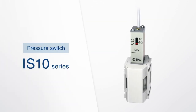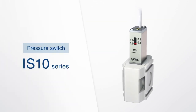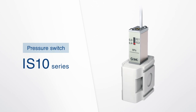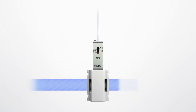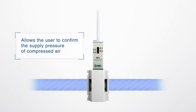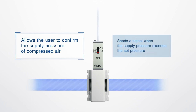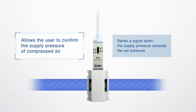The IS10 series pressure switch confirms the supply pressure of compressed air by outputting a signal when the supply pressure exceeds the set pressure.